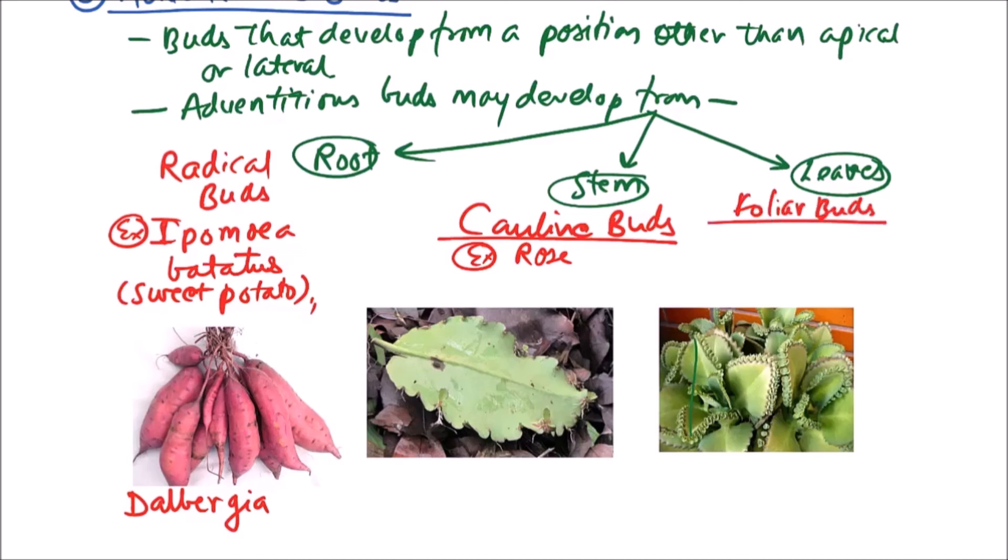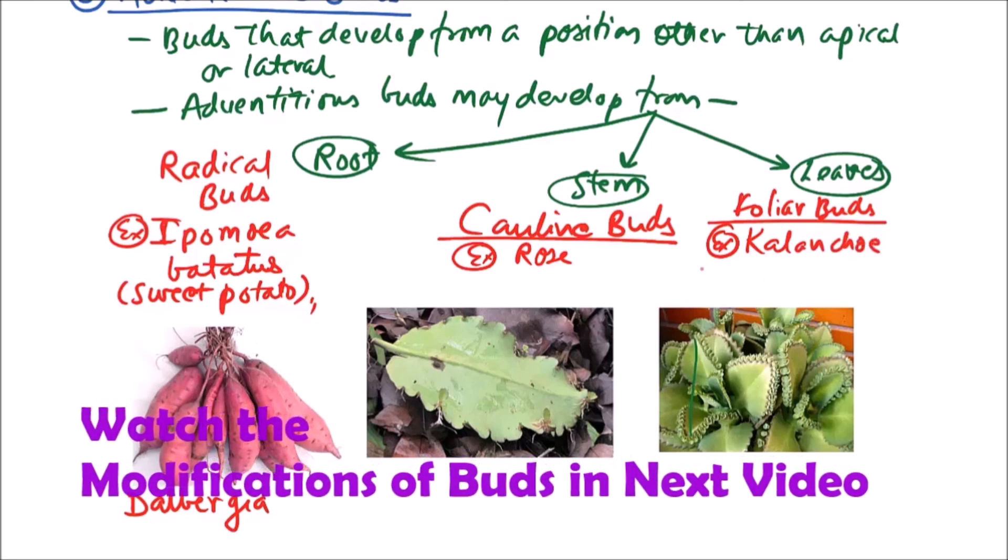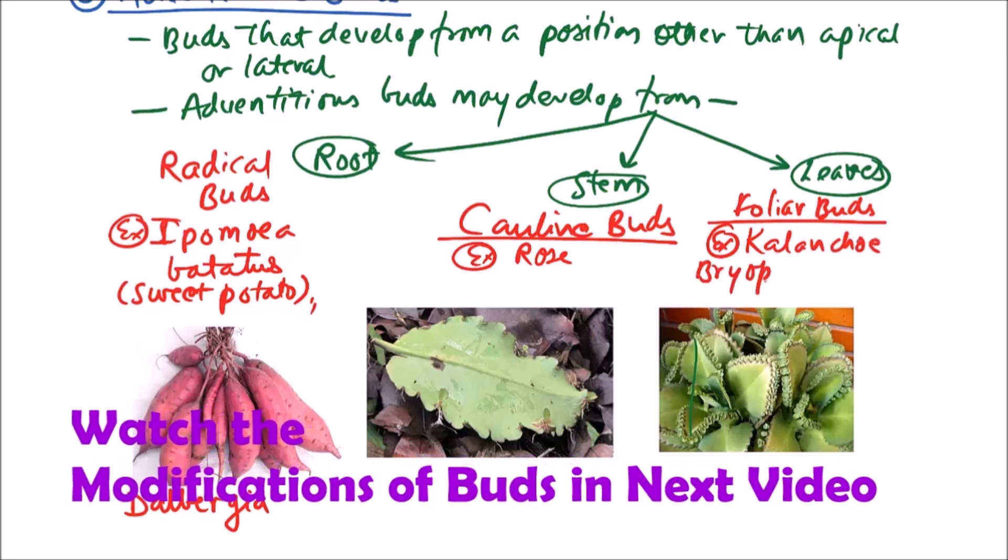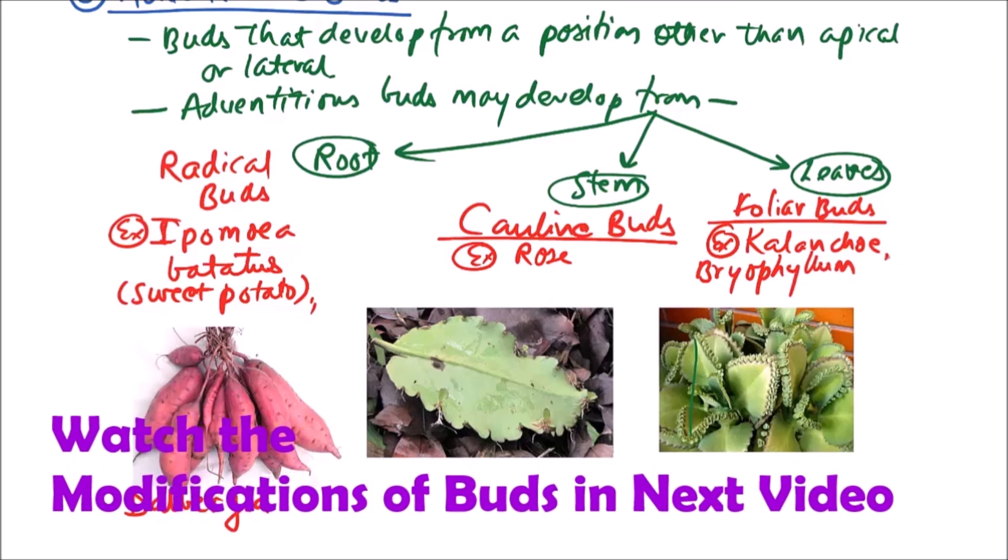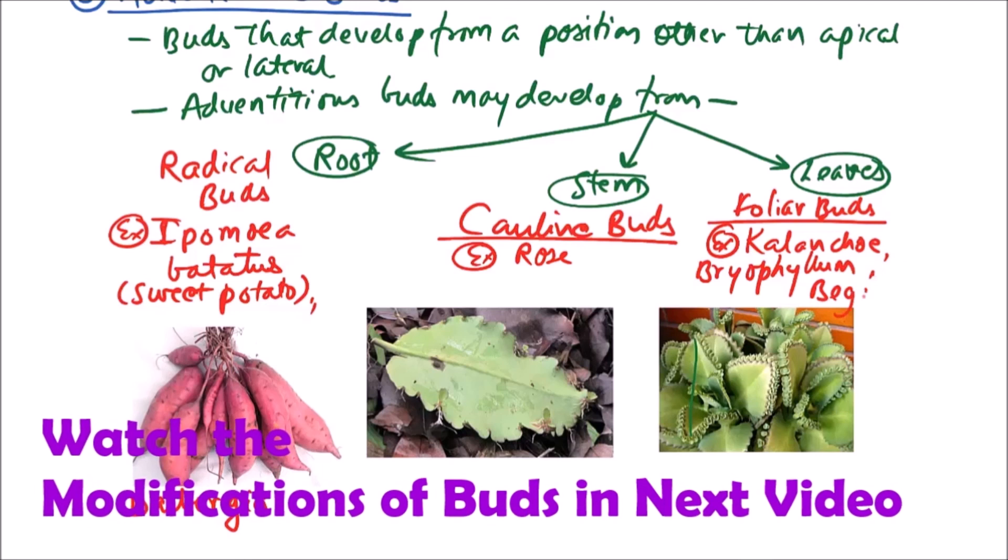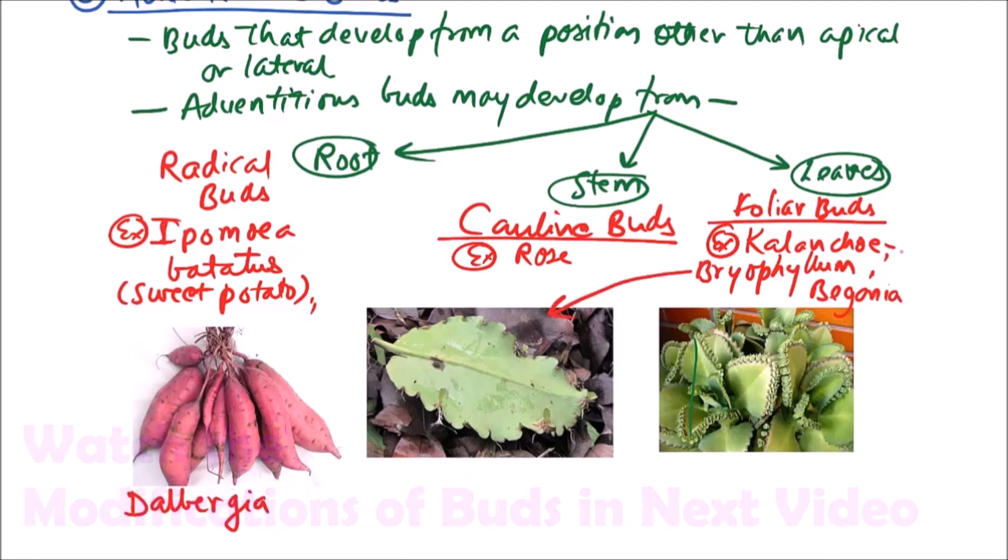Such buds are found in Kalanchoe, Bryophyllum, and Begonia. This is Bryophyllum, this one is Kalanchoe. So these are the various types of buds on the basis of location. Thanks for watching this video.